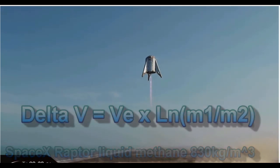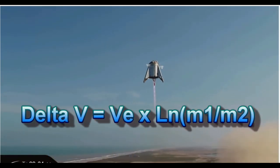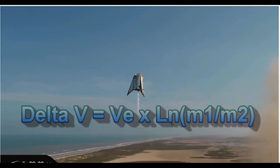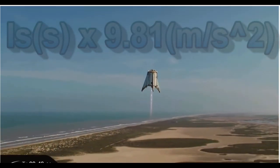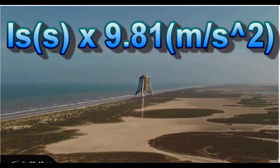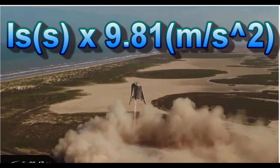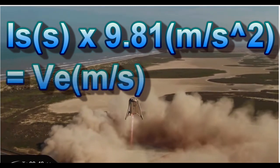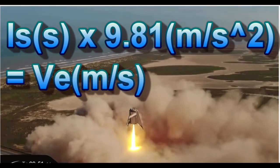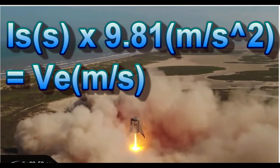The rocket equation tells us that the change in velocity, or delta V, is determined by the exhaust velocity of the propellant from the rocket engine. If you take the specific impulse and multiply it by 9.81, you should get the exhaust velocity. Now, the exhaust velocity is determined by the temperature and pressure in the combustion chamber if it has an appropriate throat and nozzle.